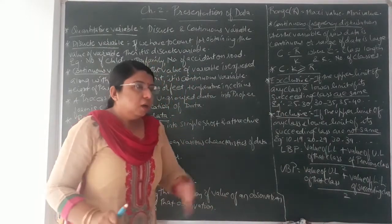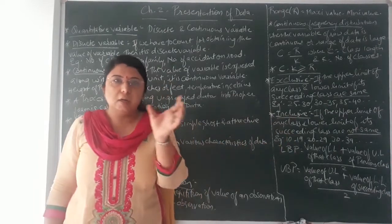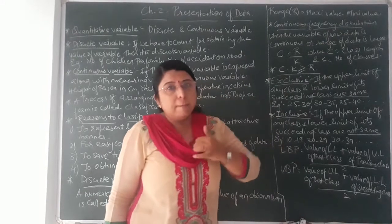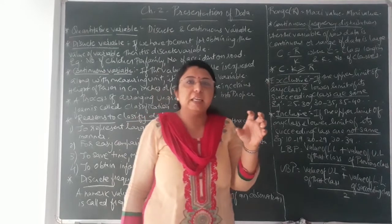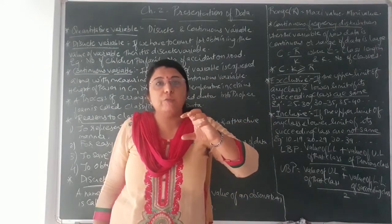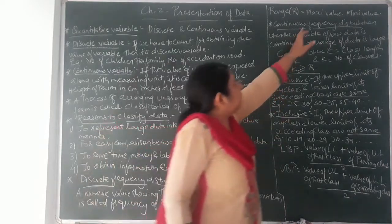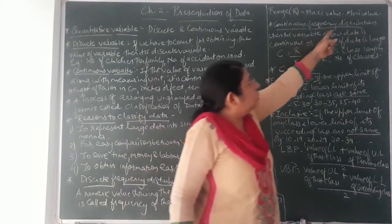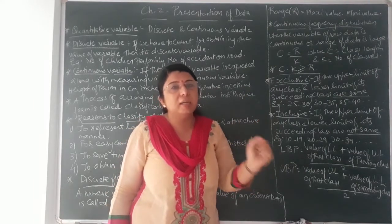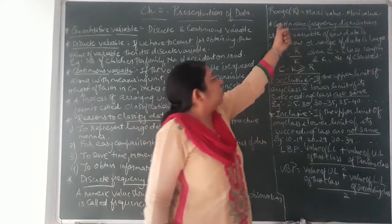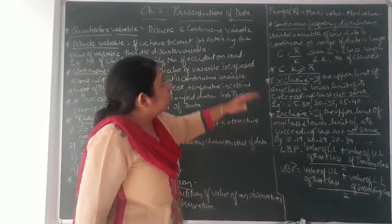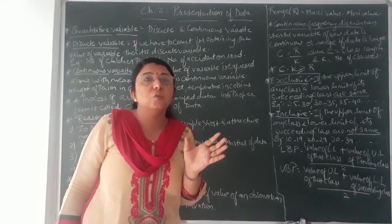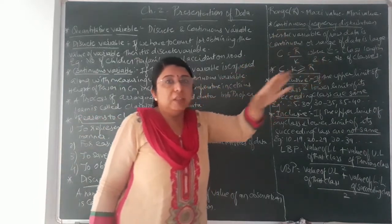The formula to find range is: Range = Maximum value − Minimum value. Suppose data of number of accidents over 30 days is given; the maximum value is 10 and the minimum value is 1. So range = 10 − 1 = 9. Discrete frequency distribution is applied when the data is of comparatively small range, and continuous frequency distribution is applied when the range is large.